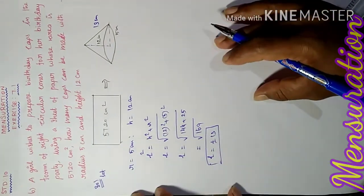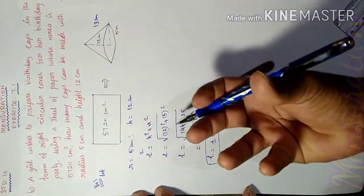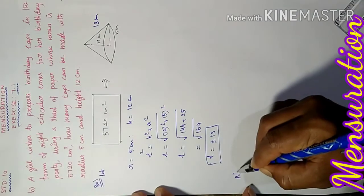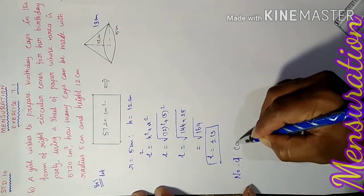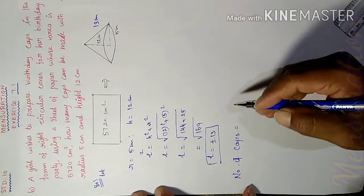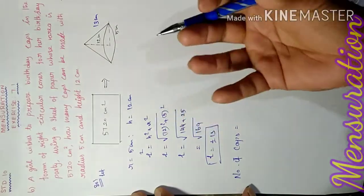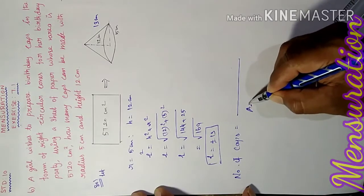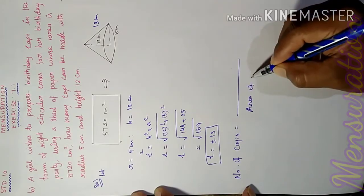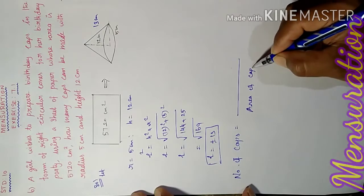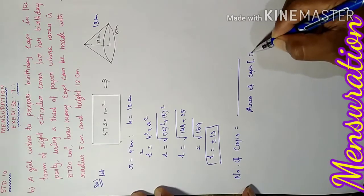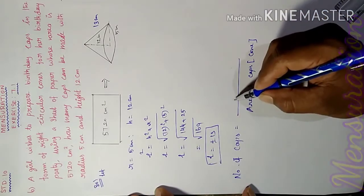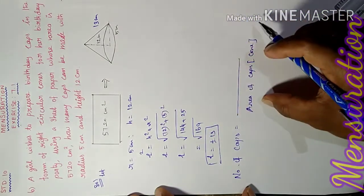Now we need to find the number of caps. Number of caps equals the total sheet area divided by the curved surface area of one cone. The formula is: number of caps = sheet area / curved surface area of cap.